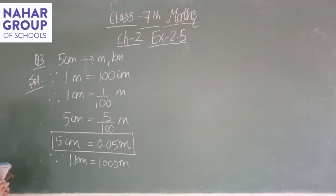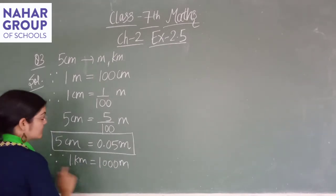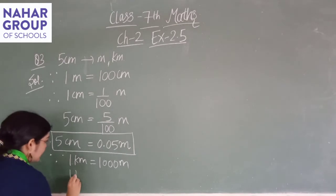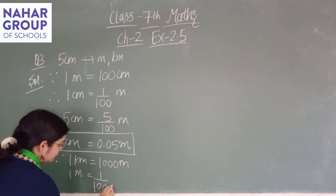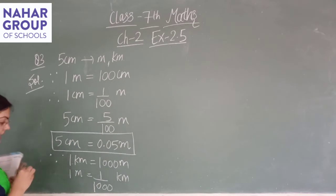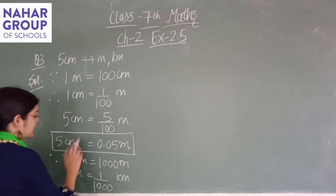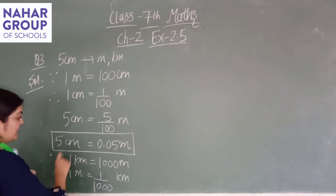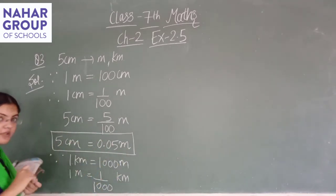1 km में 1000 meter होते हैं, तो अगर मुझे meter से kilometer में करना है, means इसका reverse process करना है। kilometer की जगे meter, 1000 की जगे 1 upon 1000, और meter की जगे kilometer। Kilometer से meter में करने के लिए 1000 से multiply, बट meter से kilometer में करने के लिए 1000 से divide। So 1 meter = 1/1000 km — मुझे 0.05 meter को kilometer में करना है।